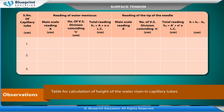Reading of water meniscus: main scale reading A (cm), number of V.S. divisions coinciding N (cm), and total reading H1 = A + N × L.C. (cm).